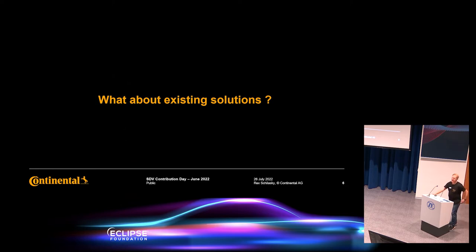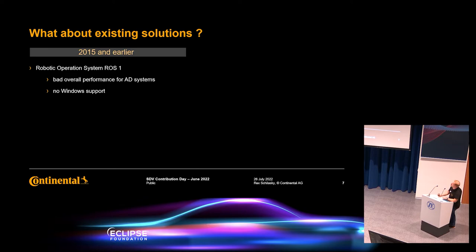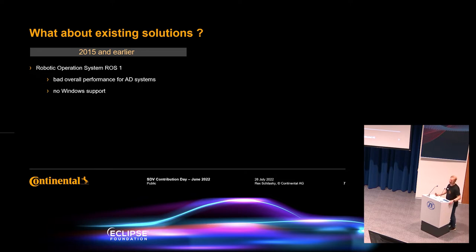What about existing solutions? At the beginning when we started, we checked the market for existing solutions. In 2015 and earlier, there was the Robot Operating System Generation 1. We really loved the API from ROS1 — in fact, we inspired a lot of eCal's API from that system — but unfortunately the overall performance of ROS1 was not fulfilling our requirements. It was based on TCP only and was not fitting our AD performance projects.